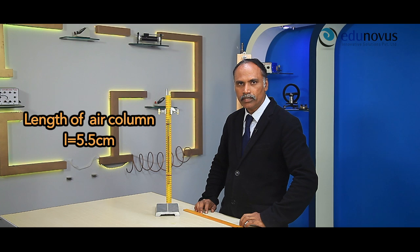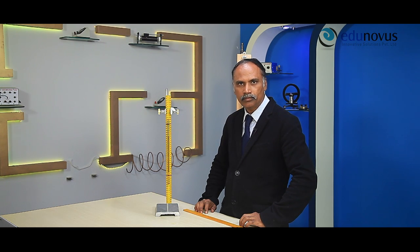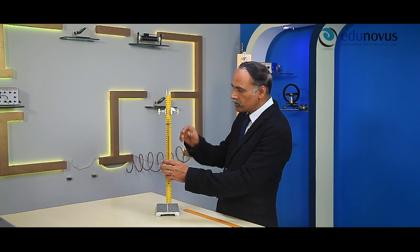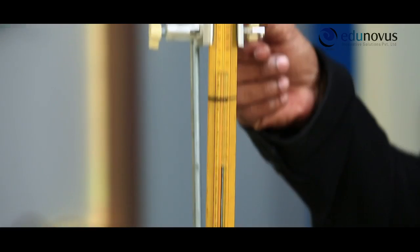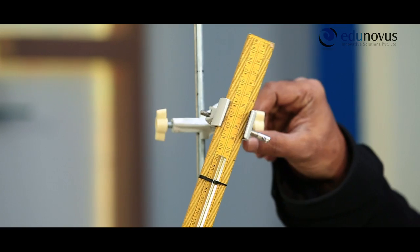After that, multiply the pressure and length of the air column and note this value in the observation table. Then, we fix the quill tube in a tilted position.